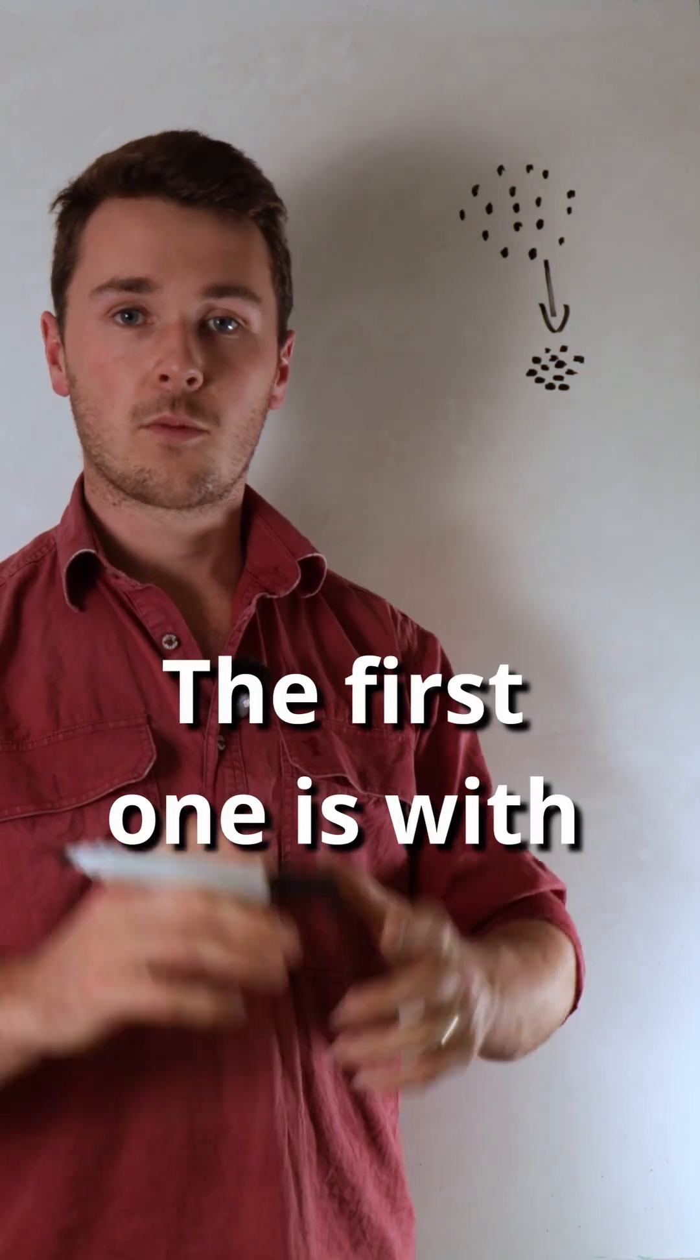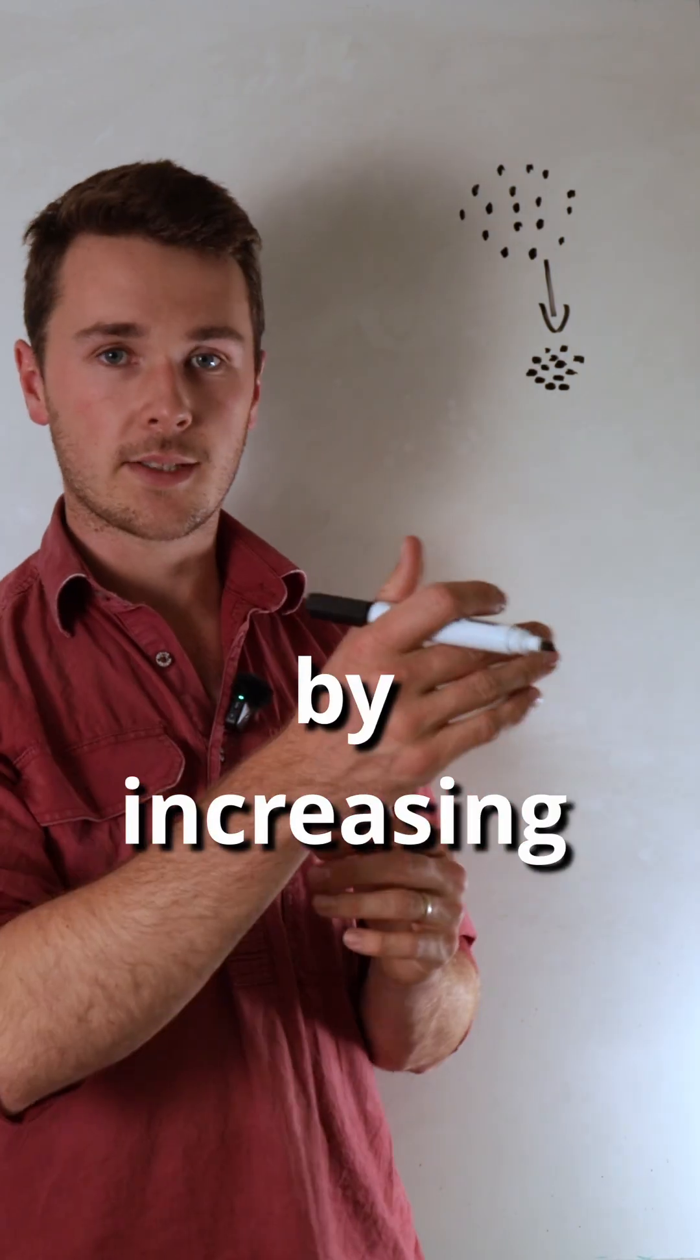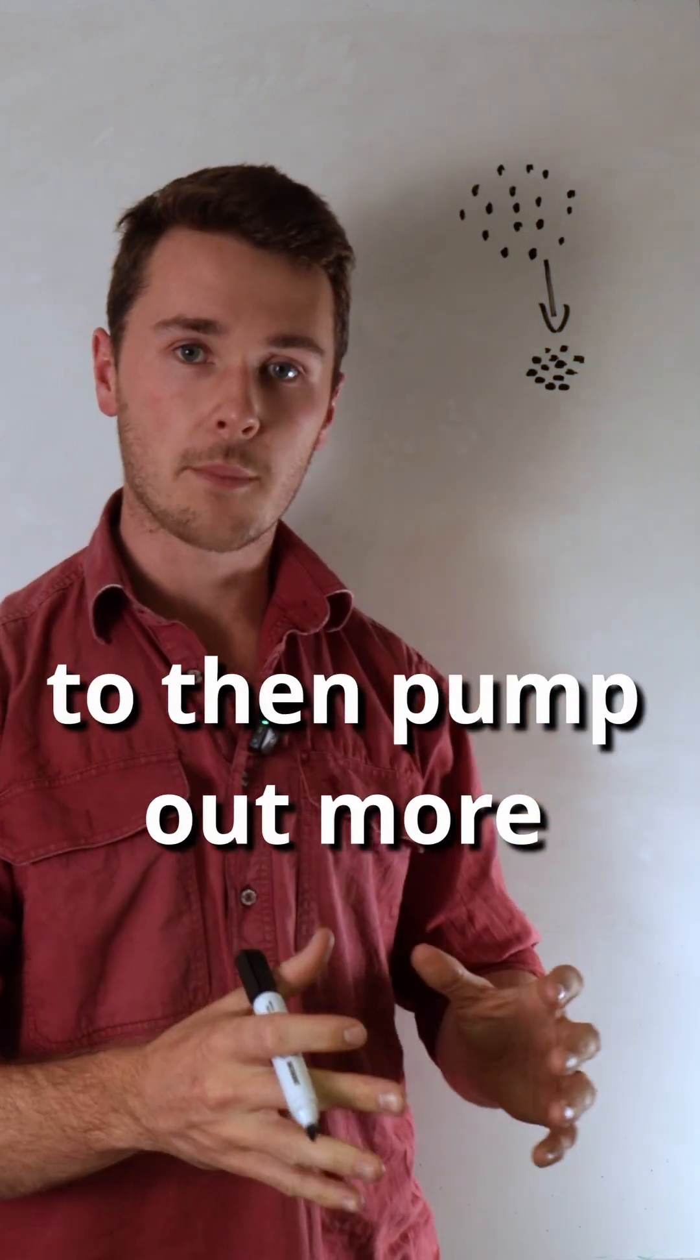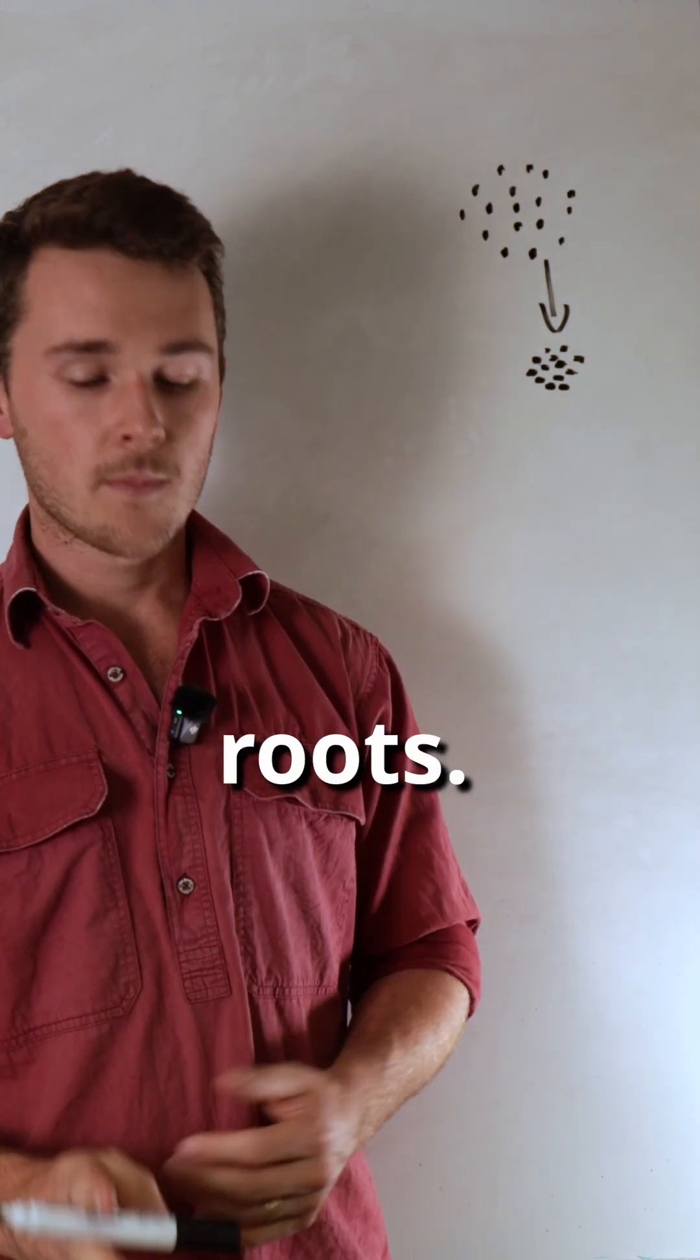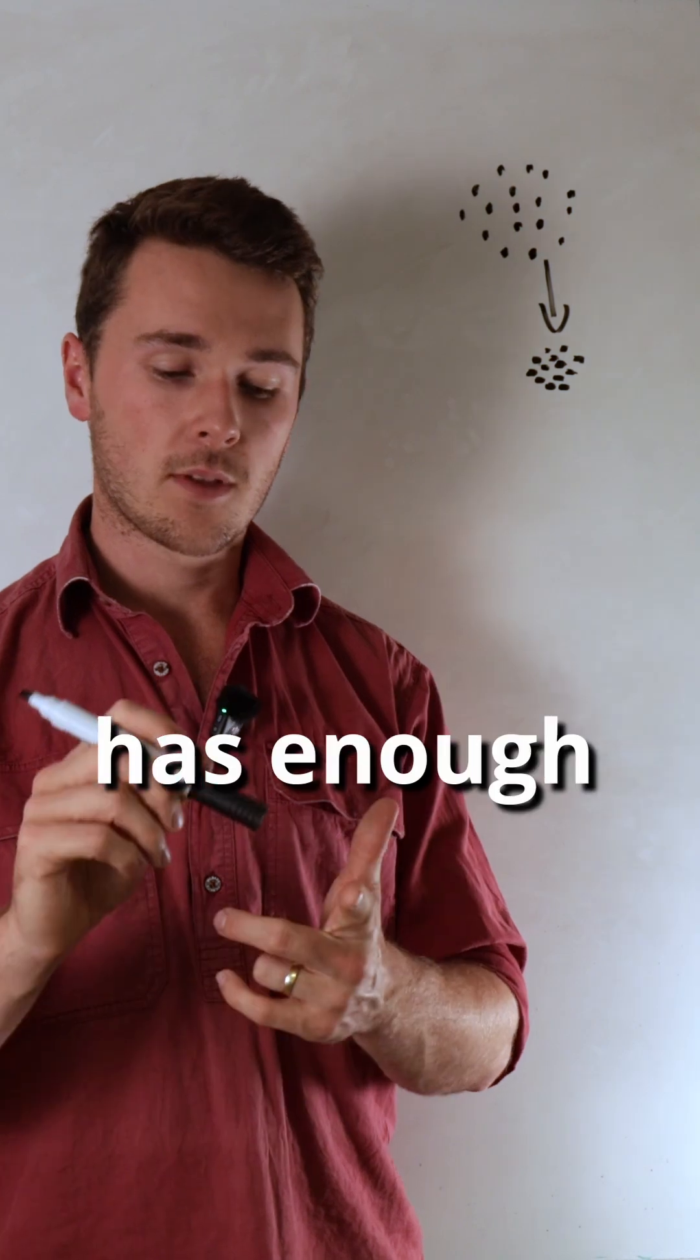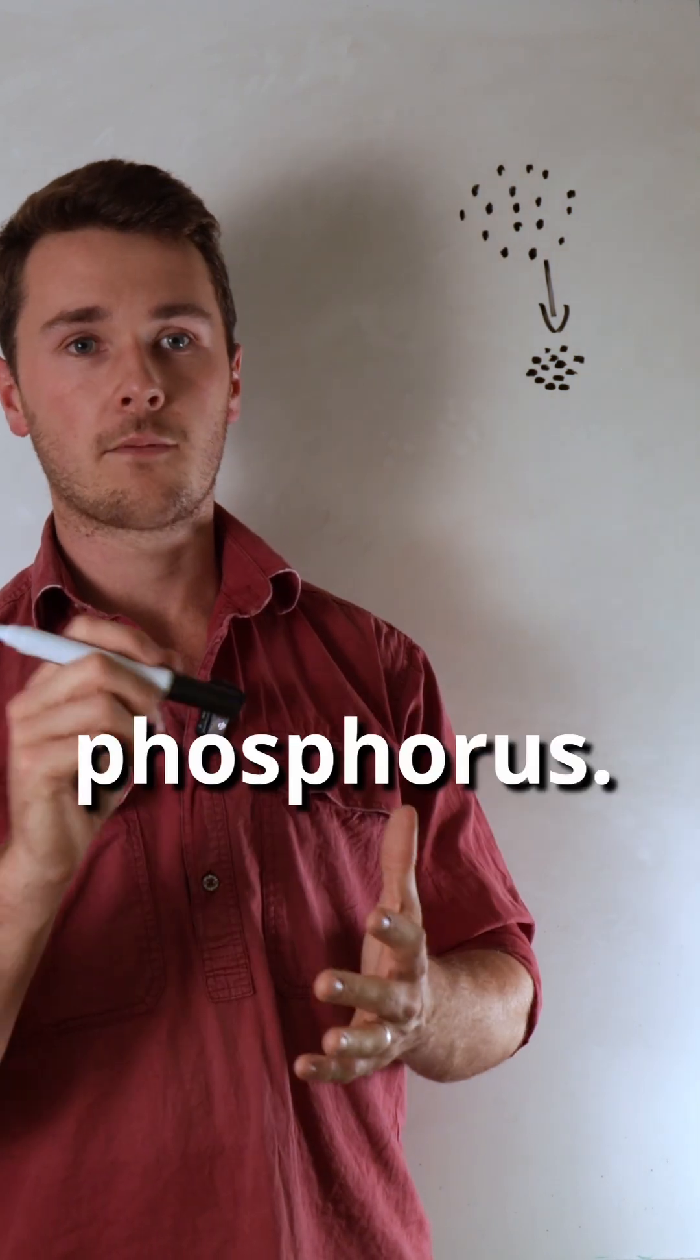The first one is with root exudates. So this can be achieved by increasing the photosynthetic ability of the plant to then pump out more sugars through the roots. To do this, we're going to make sure the plant has enough manganese, magnesium, iron, copper, and phosphorus.